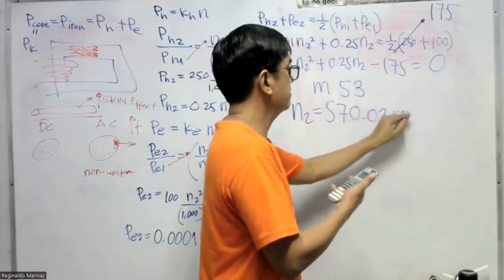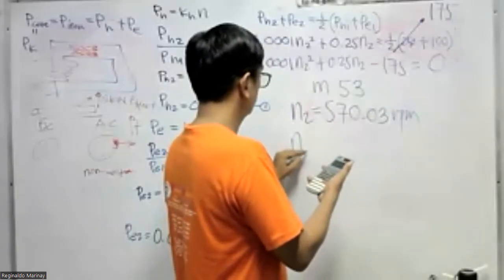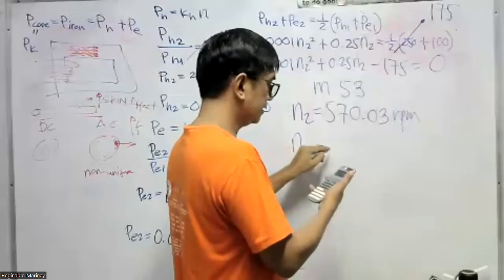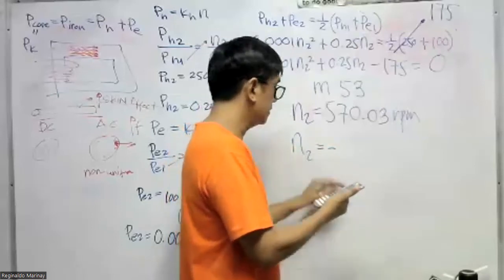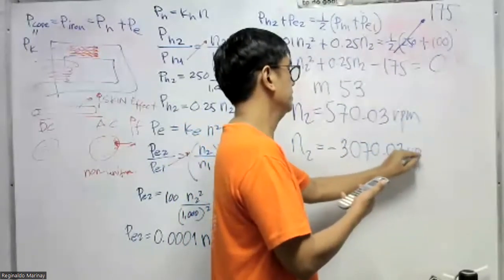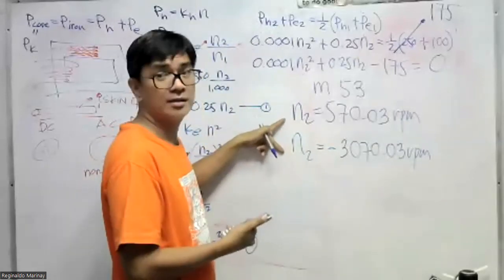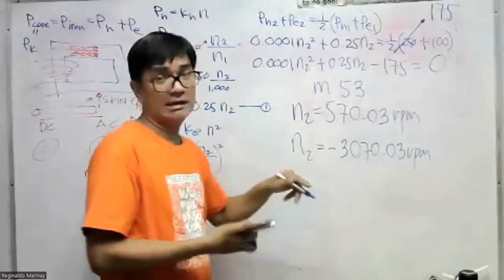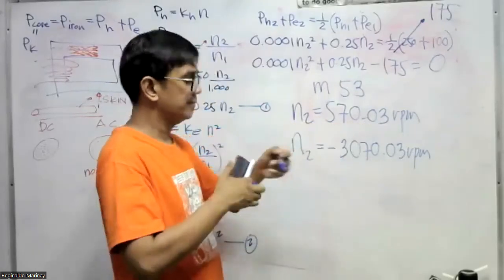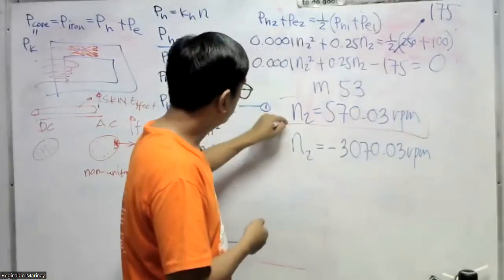If we press equals again, X sub 2 will appear. This is positive, but this will become negative 3070.03 RPM. Mathematically this is correct, both are correct, but of course practically and electrically speaking, there is no negative speed. So we consider 570 RPM. That is the answer for this REE board example.